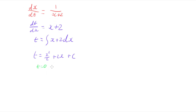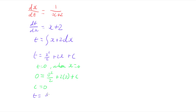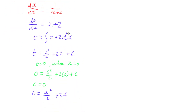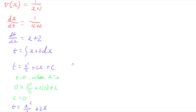So putting t equals 0 and x equals 0 in, x squared over 2 becomes 0 squared over 2, and 2 times 0 plus c equals 0, giving us c equals 0. So our equation stays as t equals x squared over 2 plus 2x. But this is time as a function of position — we want position as a function of time, so I have to rearrange this to give x as a function of t.